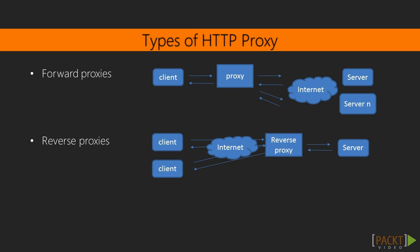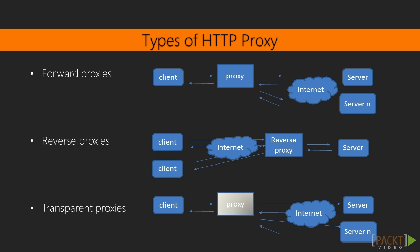Reverse proxies are proxies used by companies in order to hide behind network architecture and mainly to distribute load between real servers. The user thinks they are connecting to a real server, but they are connecting to a proxy that will handle the request. Transparent proxies intercept normal communications at the network layer without requiring any configuration on the client side. Usually, clients do not know they are using a transparent proxy. Transparent proxies usually do not modify requests and responses, and are commonly used by ISPs in order to provide faster responses to their customers. The proxy acts as a router or gateway.